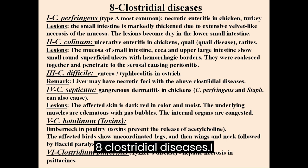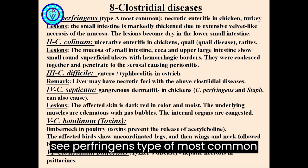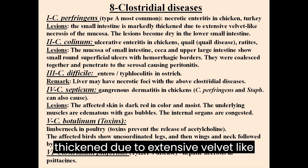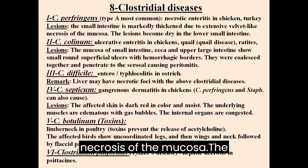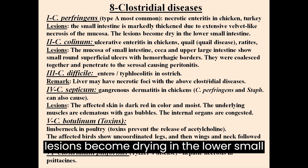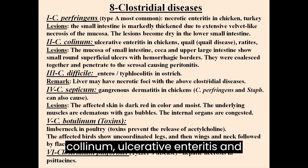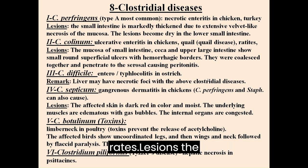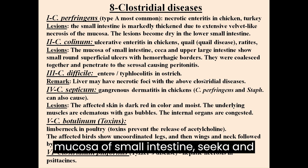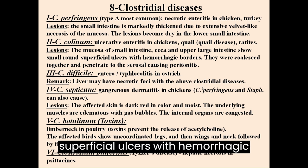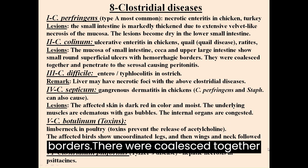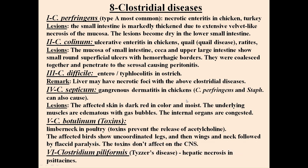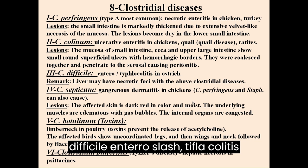Clostridial Diseases: 1. C. perfringens type A — most common cause of necrotic enteritis in chickens and turkeys. Lesions: the small intestine is markedly thickened due to extensive velvet-like necrosis of the mucosa, lesions becoming severe in the lower small intestine. 2. C. colinum — ulcerative enteritis in chickens, quail (quail disease) and ratites. Lesions: mucosa of small intestine, ceca and upper large intestine shows small round superficial ulcers with hemorrhagic borders, coalescing and penetrating to the serosa, causing peritonitis. 3. C. difficile — entero/typhlocolitis in ostrich.